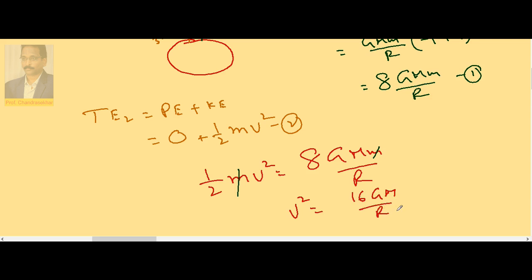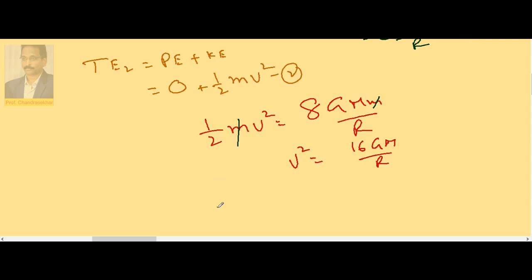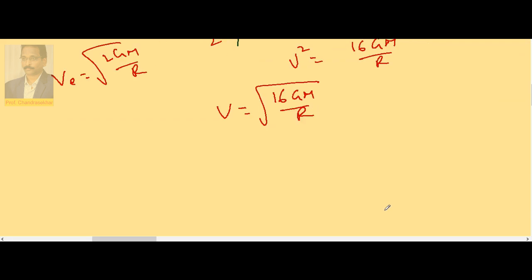So v = √(16GM/R). We know escape velocity from the surface of the earth is √(2GM/R). So let us write this as √8 times √(2GM/R).